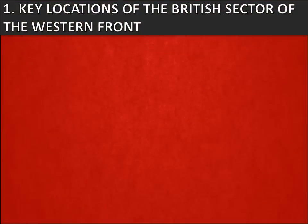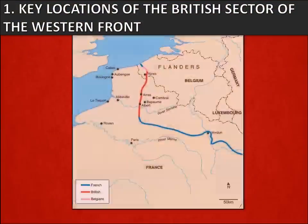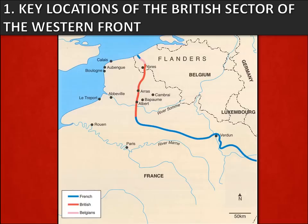Let's start with a quick overview of the key locations of the British sector of the Western Front. There are four areas you need to know about: Ypres, the Somme, Arras and Cambrai.